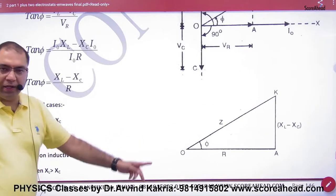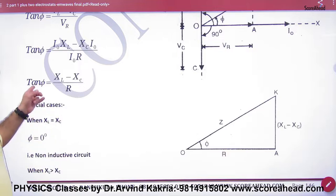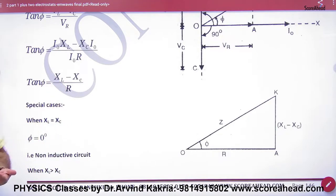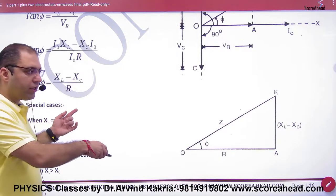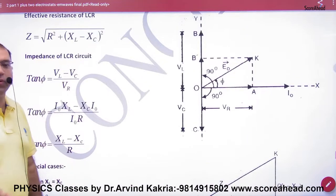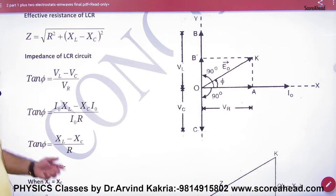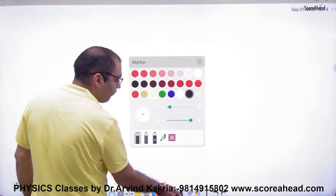We have done an impedance triangle, and in that triangle I assumed that VL is greater than VC. Now, it is also possible that VC is greater than VL. If VC is greater than VL, then what will be the formula of φ?